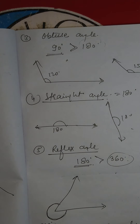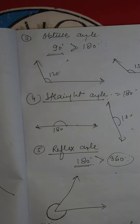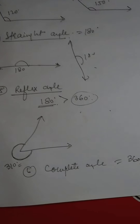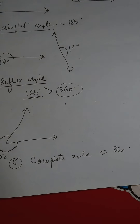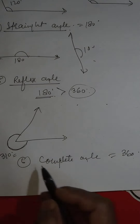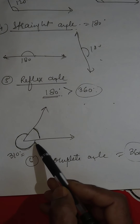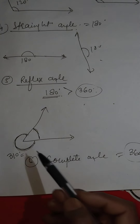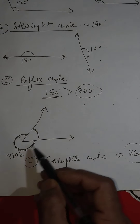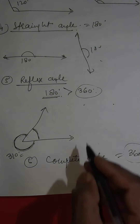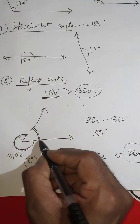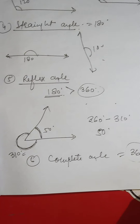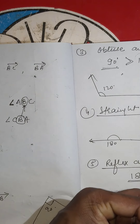The complete angle is always equal to 360 degrees. If the complete angle is 360 degrees, we can subtract the reflex angle to find the remaining angle. For example, 360 minus 310 degrees equals 50 degrees — so that remaining angle is 50 degrees.